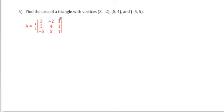So we write 3, -2, the coordinates of the first one. And 5, 4, the coordinates of the second. -5, 5, the coordinates of the third. And we put 1, 1, 1 in the third column to make a 3 by 3 determinant.